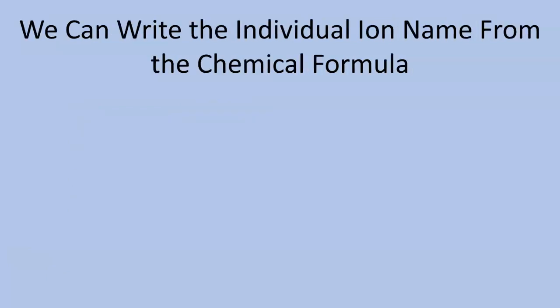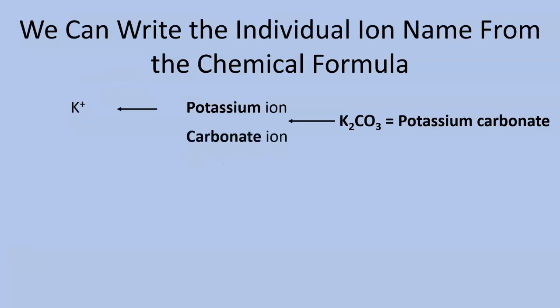So we can write the ion name from a given chemical formula. Basically, we're just going to work backwards. We've been given this formula: K2CO3, potassium carbonate. If I take the potassium carbonate and break it down, I have a potassium ion, and that's just going to give me my K with a positive charge. But I have my carbonate ion, and that gives me my CO3 with a two negative charge.